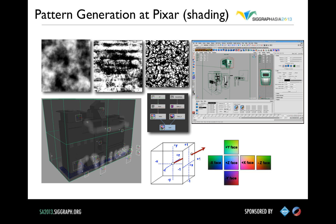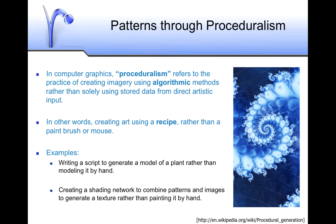In particular, I'm going to talk about pattern generation at Pixar — not so much how materials interact with light, but how we create the patterns that we use to drive the parameters on our materials. I'll start with procedural pattern generation. In computer graphics, proceduralism tends to refer to algorithmic methods to create imagery, as opposed to getting data from a stored file or direct artistic input — creating art using a recipe rather than a paintbrush or a mouse. A shading network that combines patterns and images to create a texture would be procedural, as opposed to just painting it by hand.